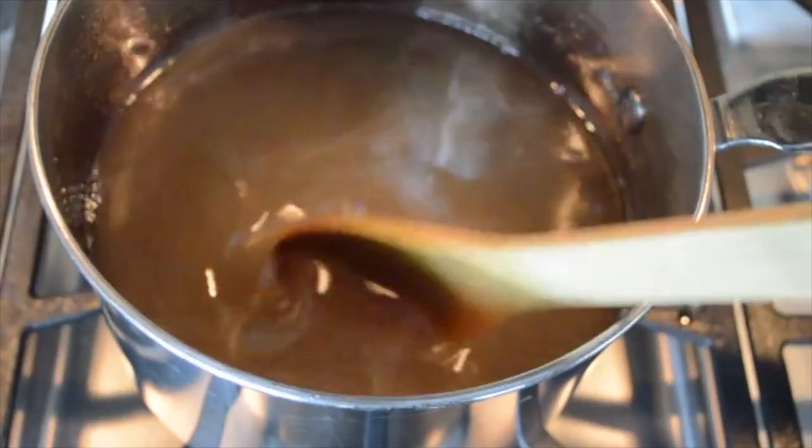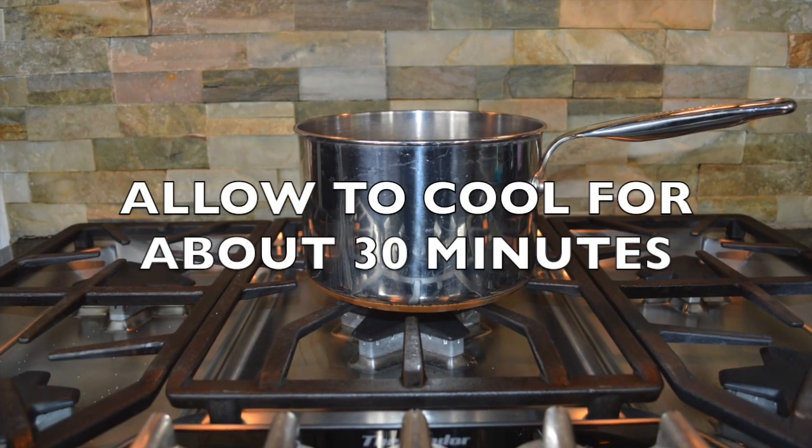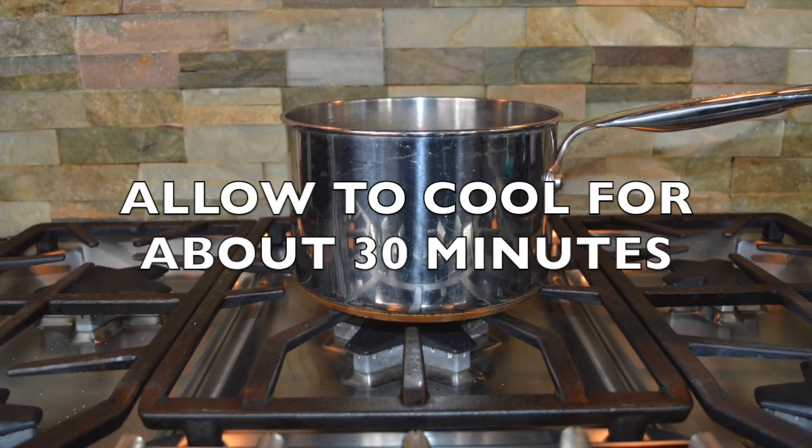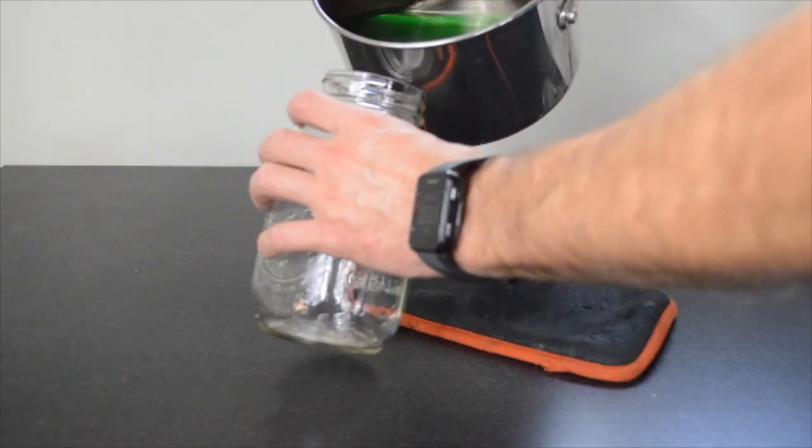If you are using food coloring or flavoring, you can add it now and stir. Leave the sugar solution on the stove to cool for about 30 minutes. Rinse your jar with fresh water and then pour in the sugar solution.